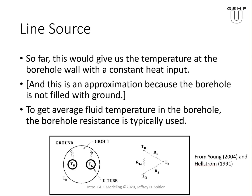The line source is intended to give us the temperature at the borehole wall with a constant heat input. This is an approximation because the borehole itself isn't filled with ground, and the heat source isn't actually a line — the heat comes in through the tubes. So the way this is typically used is: we use the line source to get the temperature of the borehole wall.